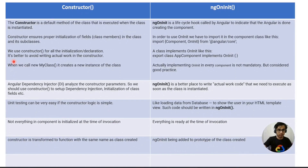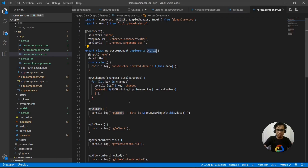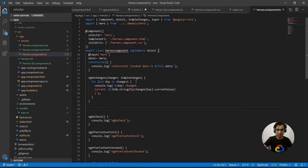ngOnInit comes from the OnInit interface. When we create a new instance of the class, the constructor is invoked. Implementing OnInit in every component is not mandatory but is considered good practice. If you remove ngOnInit it won't complain, but if you are implementing OnInit you need to have it. If you don't need ngOnInit in your component, simply don't implement it.